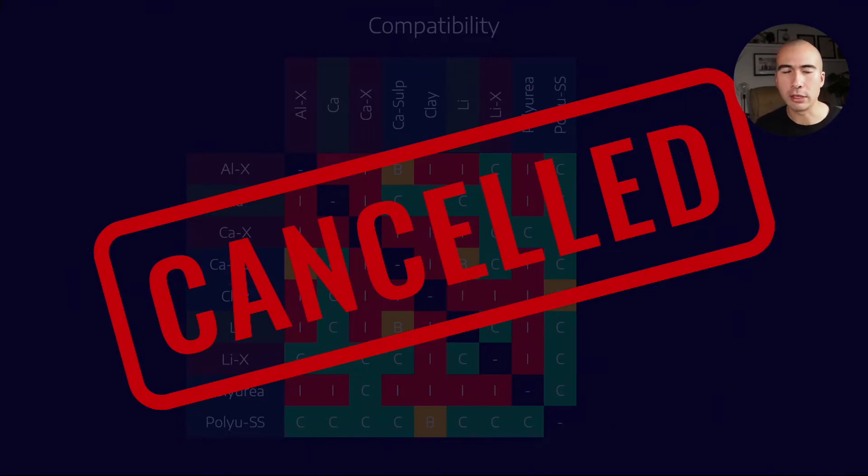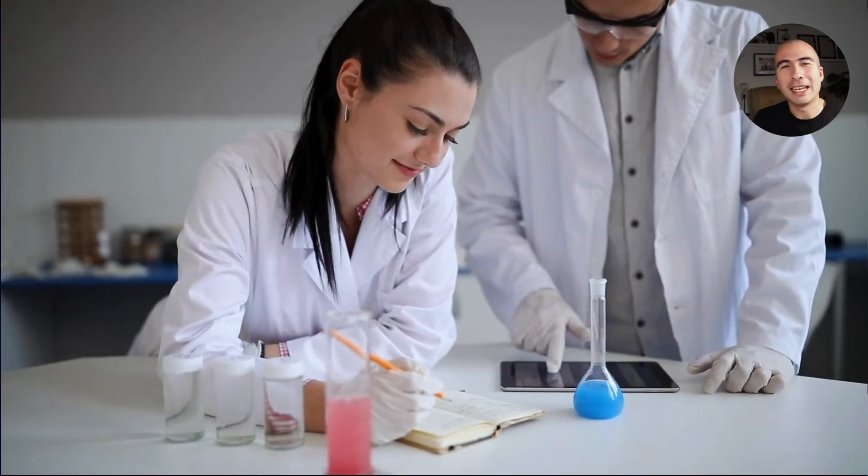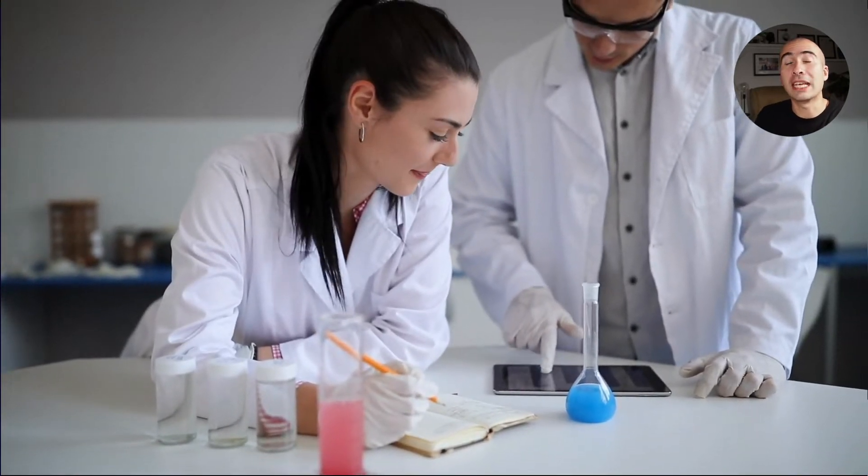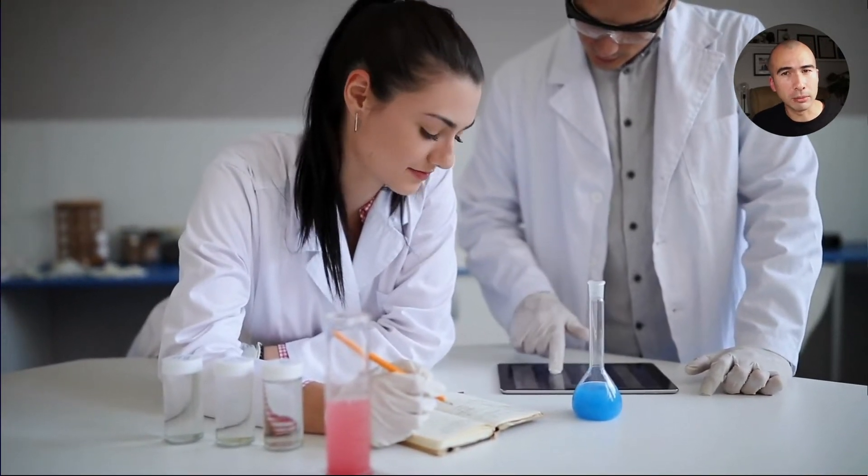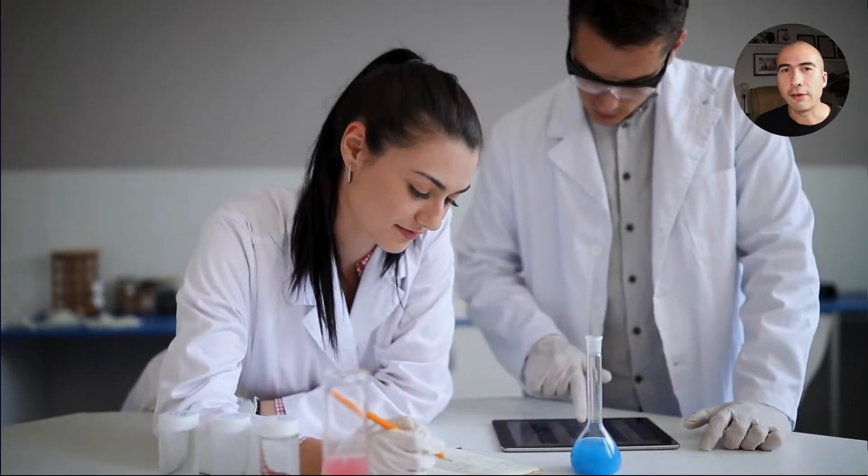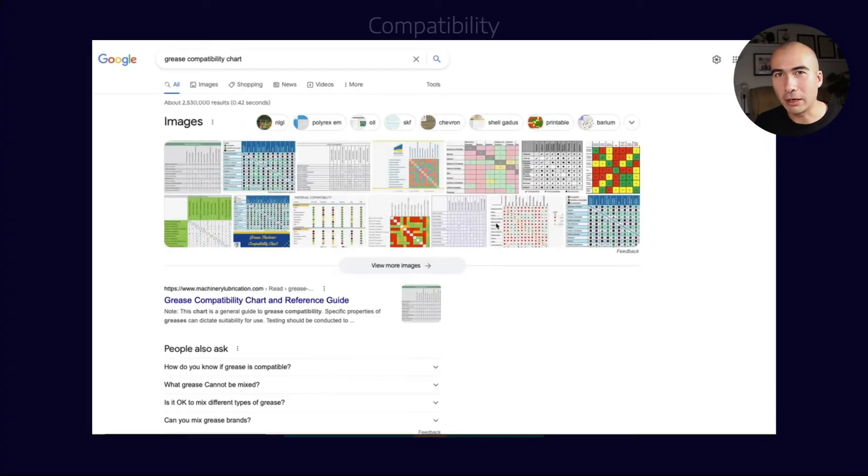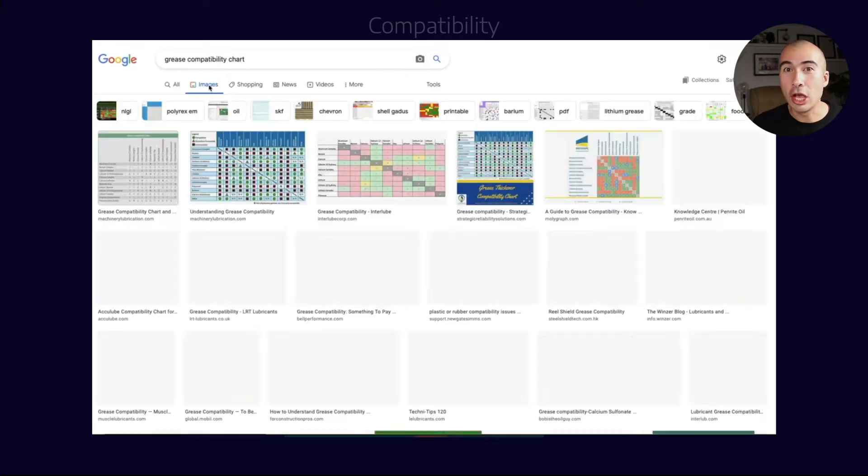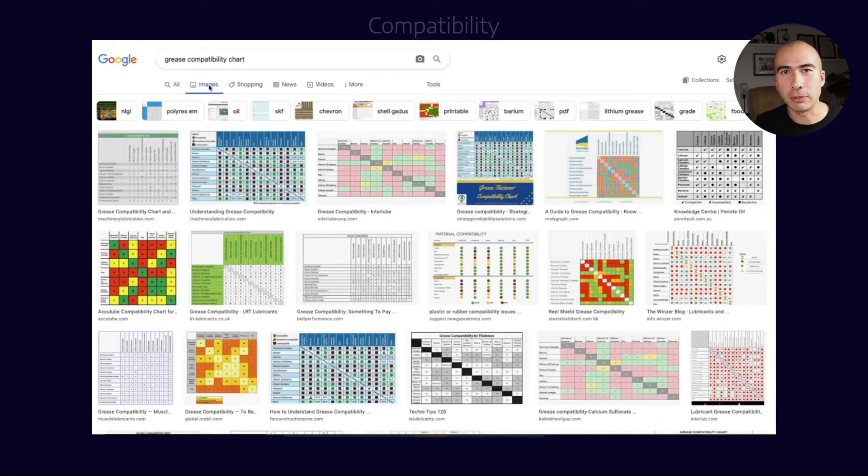And there's some good reasons for it. First of all, when you look at all the published charts, they don't really tell you what kind of testing methodology that they used in the lab to determine the compatibility. The other thing is, if you go on Google and you type in grease compatibility chart, and you go to an image search, you'll find a whole bunch of different images.